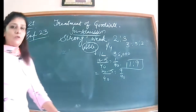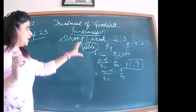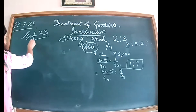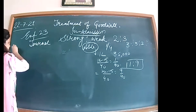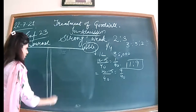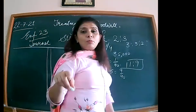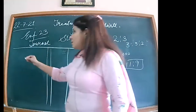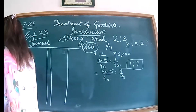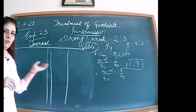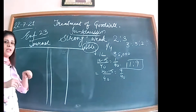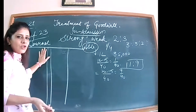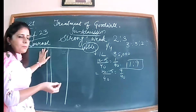This working note — calculating sacrificing ratio — was our requirement; nowhere was it directly asked in the question. In order to pass the second entry, I need the sacrificing ratio. We will create the full journal format. Since the question states Abel was admitted on 1st April, you write that date in the date column. For serial numbering of entries, keep that column structured properly.